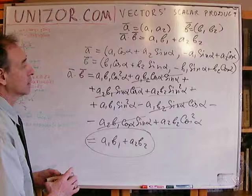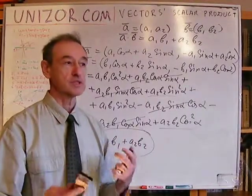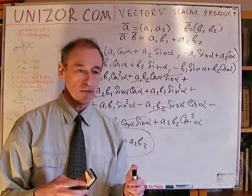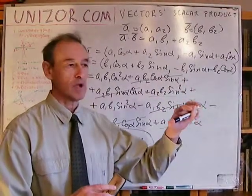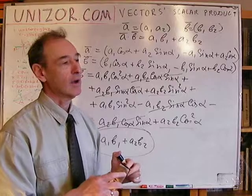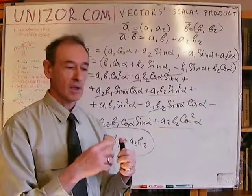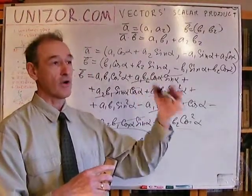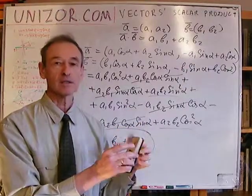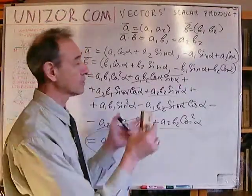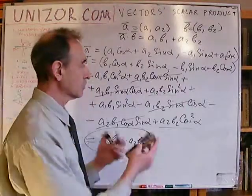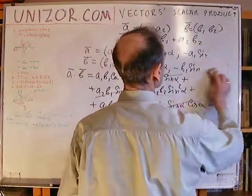That's very important: the scalar product is invariant relative to rotation and other transformations of coordinates that do not change lengths and angles. My proof depended on a particular drawing where the point is in the first quadrant and the rotation angle is smaller than the angle to the point. But for every other variation — for example, if the point is in the third quadrant — you can do exactly the same type of manipulations with a couple of triangles. This is just an illustrative example that works the same way in any mutual position of points and vectors.